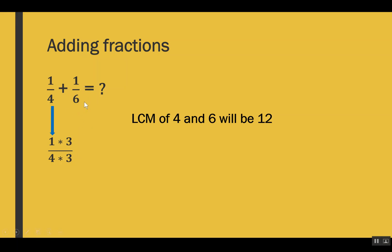Our next fraction is 1/6. To make 6 into 12, we multiply by 2. As stated, if we multiply the denominator, we must also multiply the numerator. So we multiply both numerator and denominator by 2. After making the denominators the same, 1/4 becomes 3/12 and 1/6 becomes 2/12.